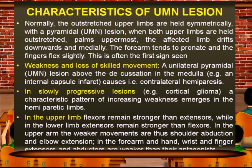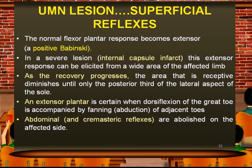Unilateral pyramidal tract lesions above the decussation — in the medulla, internal capsule, or higher — cause contralateral hemiplegia. In slowly progressive lesions, such as cortical gliomas, a characteristic pattern of increasing weakness emerges. In the upper limb, flexors remain stronger than extensors, while in the lower limb, extensors remain stronger than flexors. In the upper arm, shoulder abduction, elbow extension, wrist and finger extensors, and abductors are weaker than their antagonistic muscles.